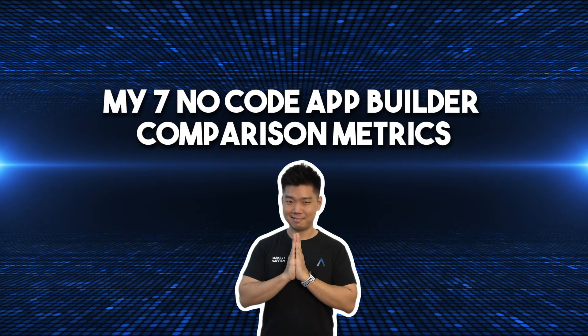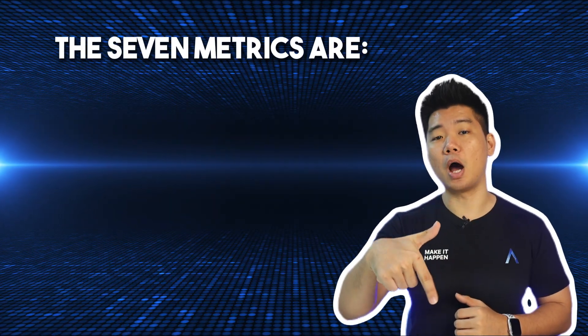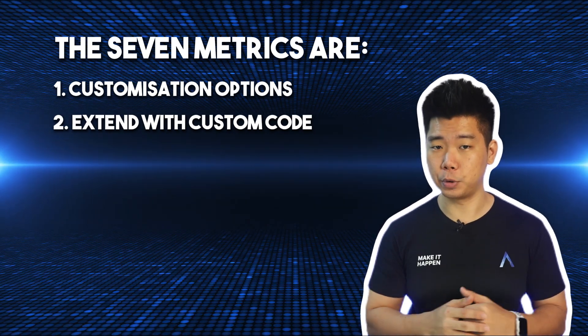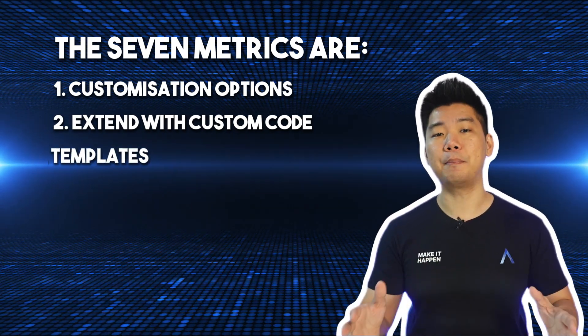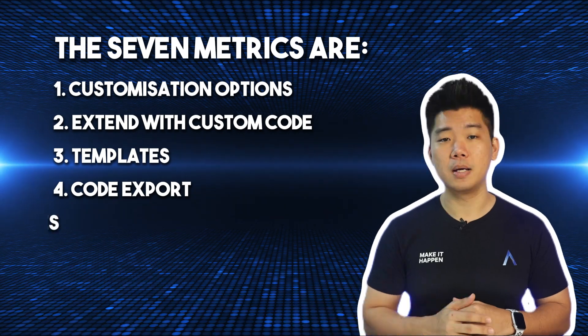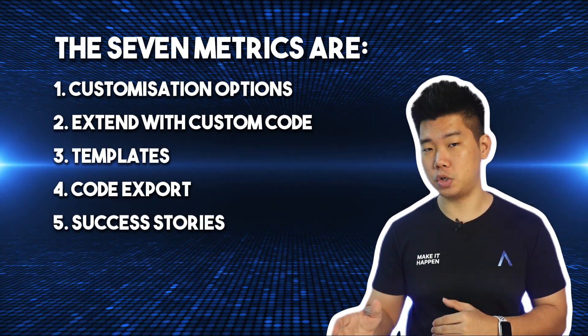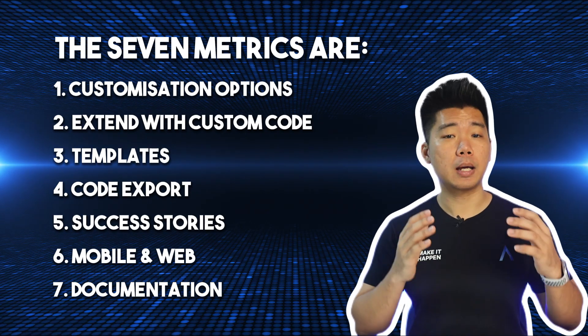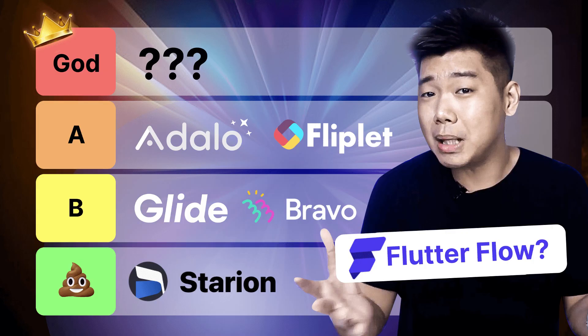Let's start with my seven no-code app builder comparison metrics. The seven metrics are: Customization Options — make powerful apps with built-in components alone; Extend with custom code — further customize with my own code; Templates — minimum edits needed to be launch ready; Code export — can download source code anytime; Success stories — lots of finished projects on their showcase page; Mobile and web — can build both a mobile and web app; Documentation — can refer to official guides if stuck on a range of topics.